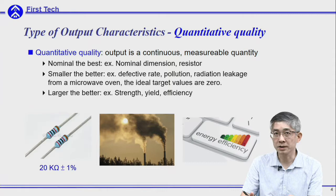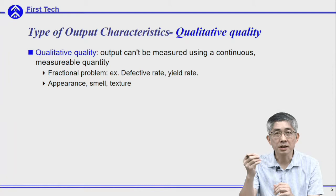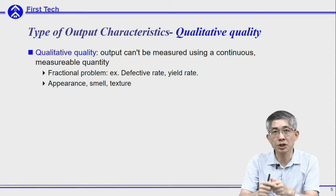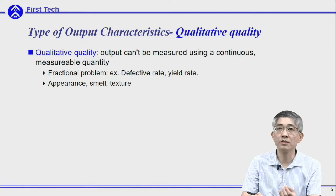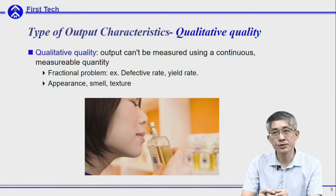The next category of output characteristic is called qualitative quality — something you cannot measure using continuous measurable quantities. For example, in fractional problems, if you are within the specification there is no loss, but if you are outside the specification there will be loss, so this is not a continuous criteria — it is a type of qualitative quality. A more obvious example is perfume: whether you like or dislike it is very subjective and cannot be measured by continuous quantities, so this is also a qualitative quality.